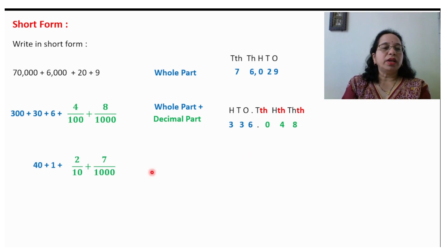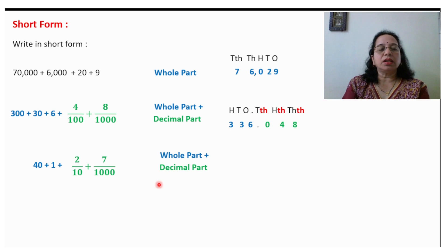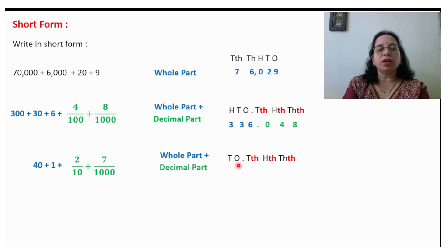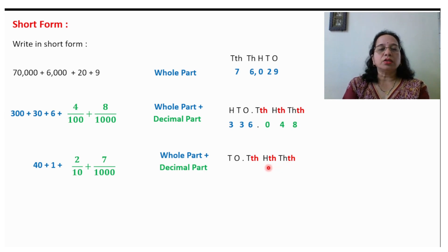Take one more example with both whole part and decimal part. Write down the places. 40 plus 1 gives 41 for the whole part. Then the decimal point: 2 is in the tenths place, and 7 is in the thousandths place — 7 will come there. No number is with the hundredths place, so we write 0. Whatever number is missing, we write 0 there.